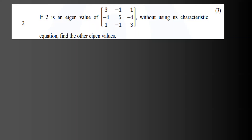If we have a 3×3 matrix, then the eigenvalues are lambda 1, lambda 2, lambda 3. A 3×3 matrix has 3 eigenvalues. So if you have 1 eigenvalue given, you need to find the other 2 eigenvalues.